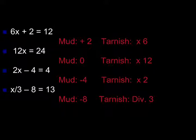Let's look at the mud and tarnish in these other problems. 12x equals 24 has no mud, but it has a tarnish of 12. 2x minus 4 equals 4 has a mud of negative 4 and a tarnish of 2. x divided by 3 minus 8 equals 13 has mud of negative 8 and a tarnish of 3.